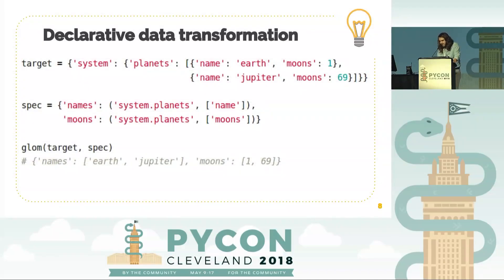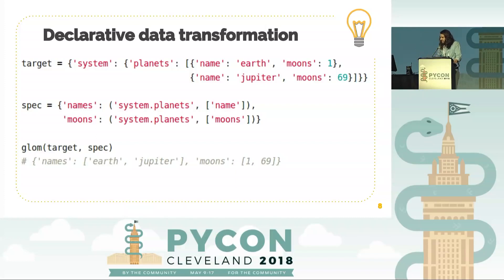But it goes much further than just access, because what I realized over the years is that I don't just need to access one field — I need to access a whole series of them to build a new object. Glom accepts more than just strings as input. In this case, we've extended the data structure to add Earth with its one moon and Jupiter with its 69 moons, and I want a list of names and a list of moon counts. With Glom you can do that — you declare a structure, hand it the target, and it renders the result.